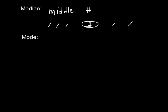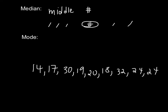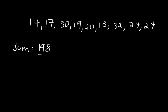So let's take a set of numbers. First let's find the mean. We need to take the sum, then divide by the number of values — in this case 9 — and therefore for our mean we get 22.